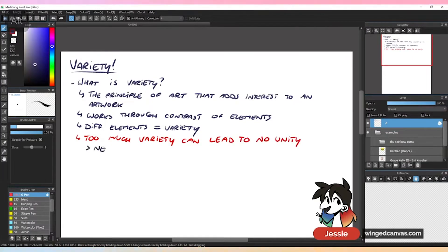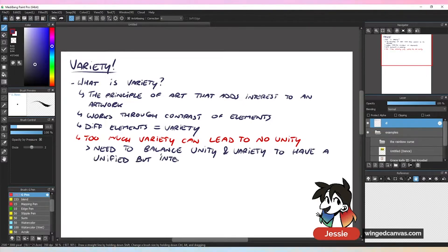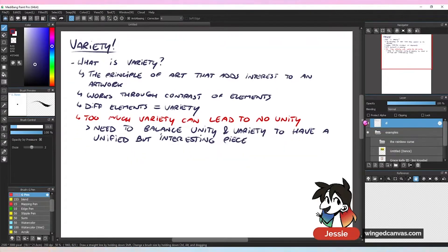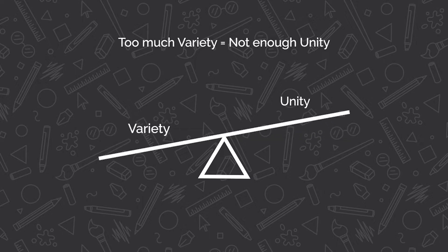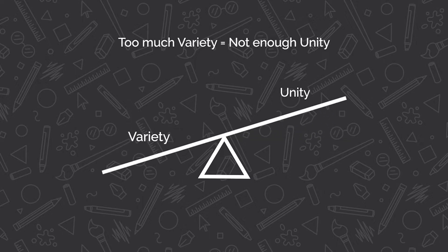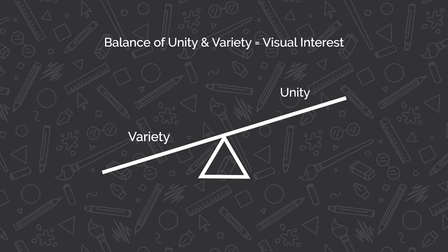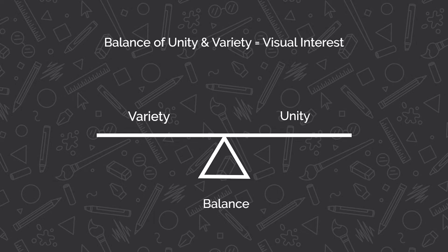However, too much variety can lead to no unity. You have to have variety in a piece in order for it to be interesting to look at — 99% of the time you need variety. But if you have too much variety, the piece will not feel unified; it'll feel like a bunch of random elements and you're going, 'what am I looking at?' So you need to balance unity and variety: enough variety for the piece to feel interesting, but enough unity so all the elements feel like they belong together.